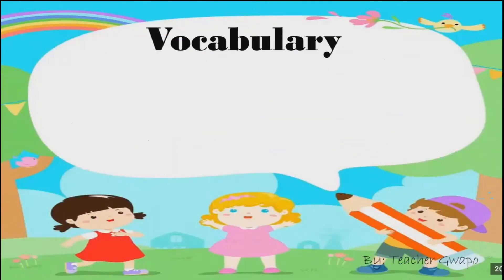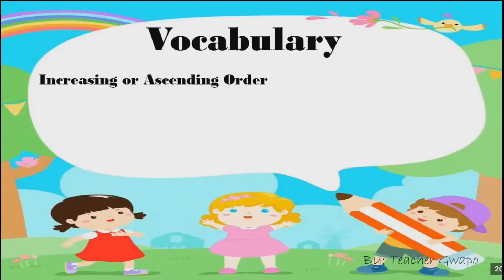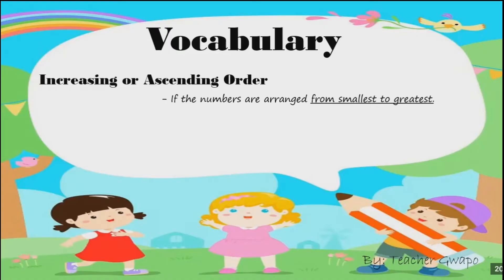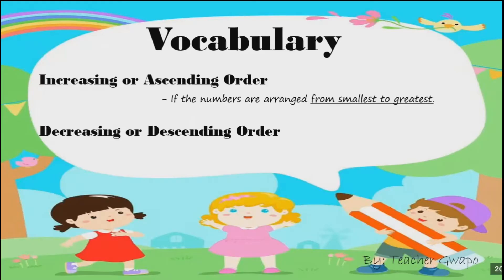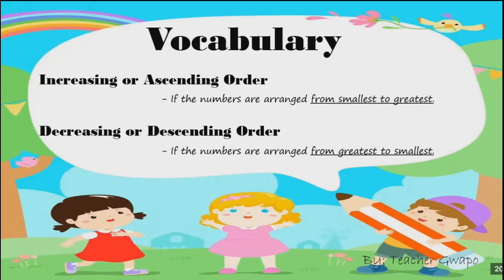Now, vocabulary before we continue our lesson. These are the key words: increasing or ascending order — when the numbers are arranged from smallest to greatest. And decreasing or descending order — when the numbers are arranged from greatest to smallest. It's like the opposite of increasing.